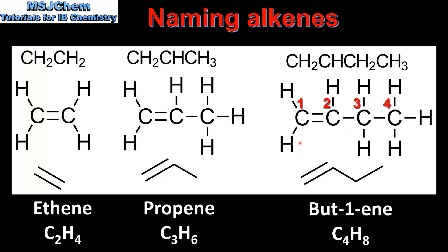But-1-ene and but-2-ene are structural isomers. They have the same molecular formula, which is C4H8, but different structural formulas. But-1-ene has the carbon to carbon double bond between carbon number one and carbon number two, and but-2-ene has it between carbon number two and carbon number three. It should be noted that but-4-ene does not exist — instead it is named but-2-ene.